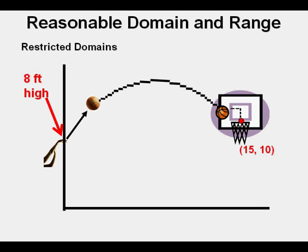And it goes through the point here at (15, 10) because it is a 15 foot shot and the basket is 10 feet off the ground. Let's add another piece of information. Let's say that the ball reaches its apex or vertex at (8, 15).